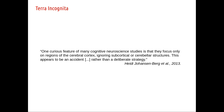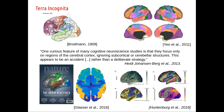Indeed, from Brodmann's times up to the latest architectonic maps from Glasser and Van Essen, everything we see is about cortical surfaces. As you can see in those very nice maps from Tomas Hare's work, the subcortex is just a black void and the cerebellum is completely cut off.